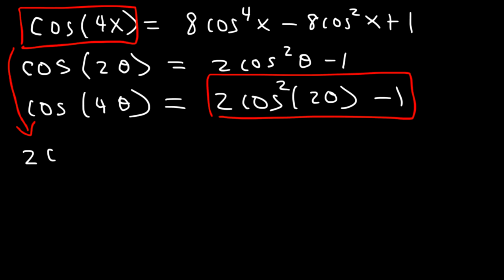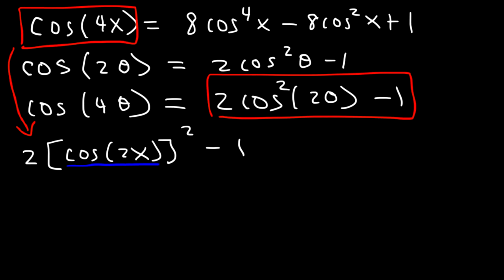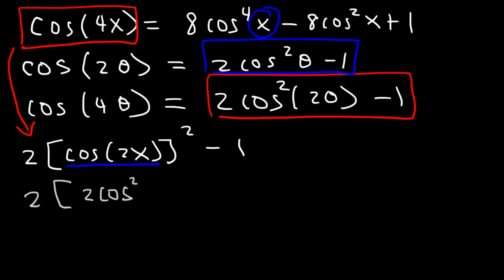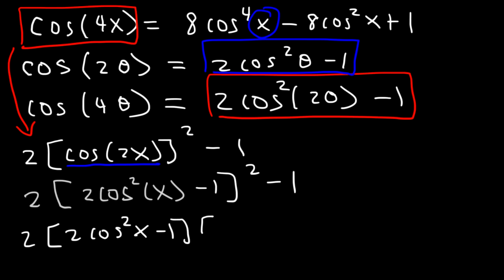I'm going to rewrite that expression as 2[cos(2x)]² - 1, putting the square on the outside. The reason is that I'm going to apply the double angle formula again, replacing cos2x with 2cos²x - 1. So the first application reduced 4x to 2x, and we need a second application to bring 2x down to 1x. This becomes 2(2cos²x - 1)² - 1, and now we need to FOIL.